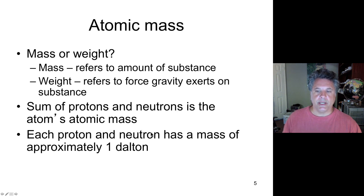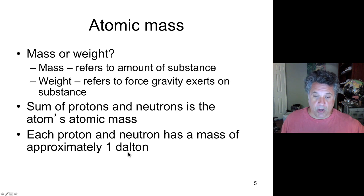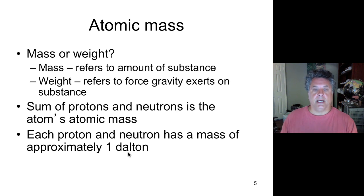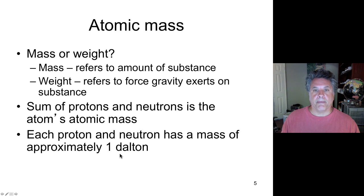Since every proton and neutron has a mass of about one Dalton, which is a very small amount of mass, we can calculate the mass of any given element based on the number of protons and neutrons it has.